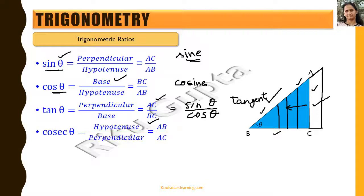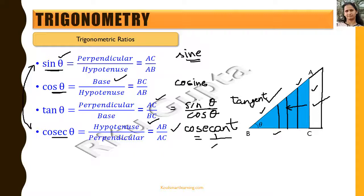Then we have another trigonometric ratio: cosec theta, whose full form is cosecant. Cosec theta equals hypotenuse by perpendicular, which is AB by AC. As we can see, it is just the reciprocal of sine theta, so cosec theta equals 1 divided by sine theta.